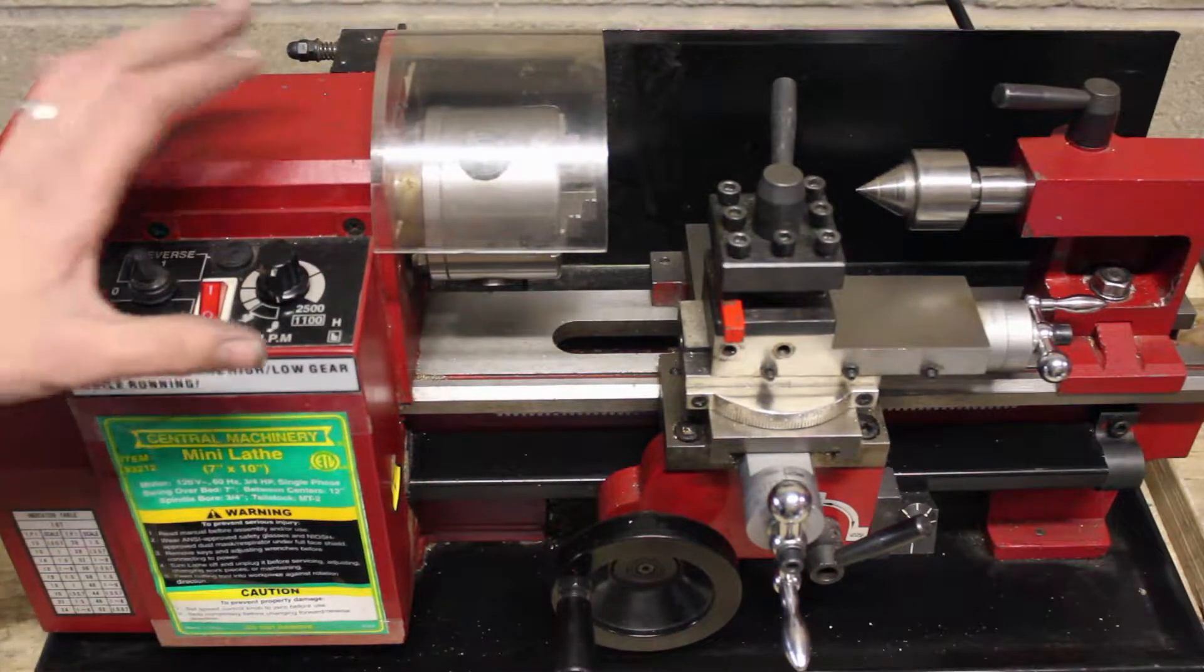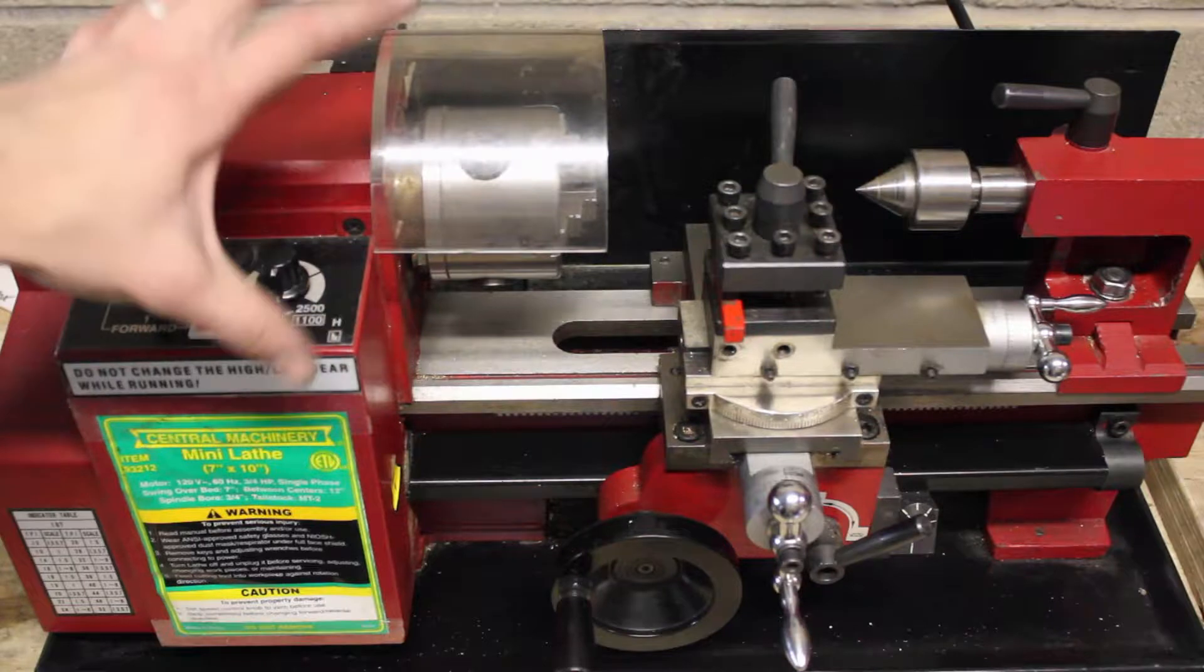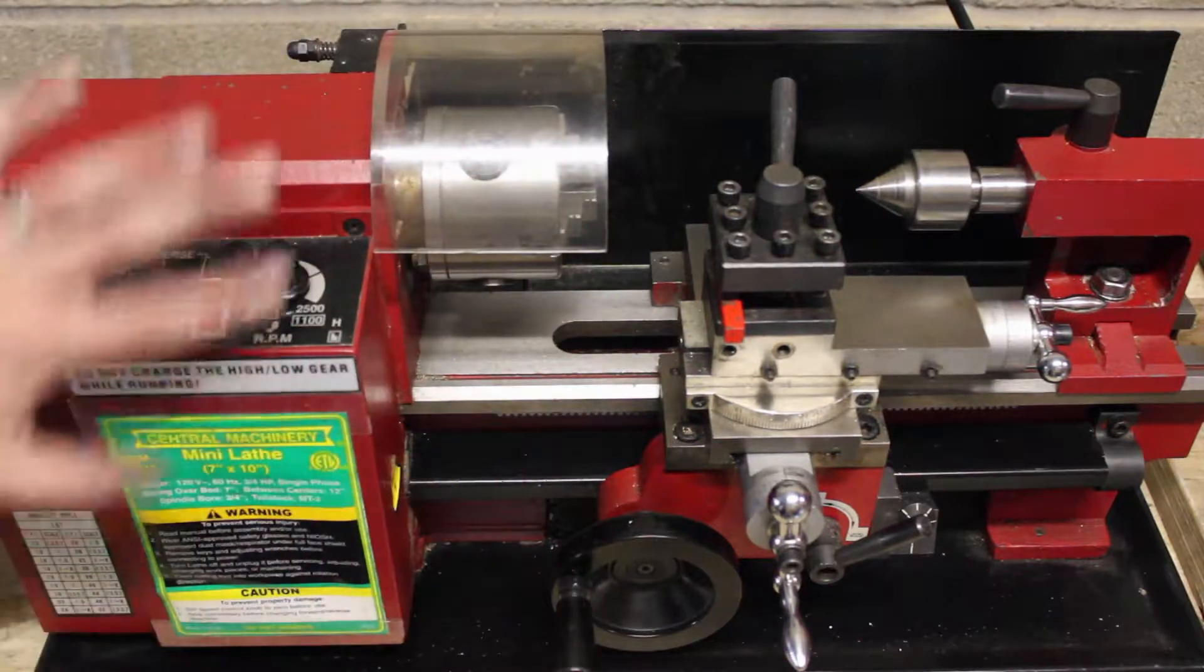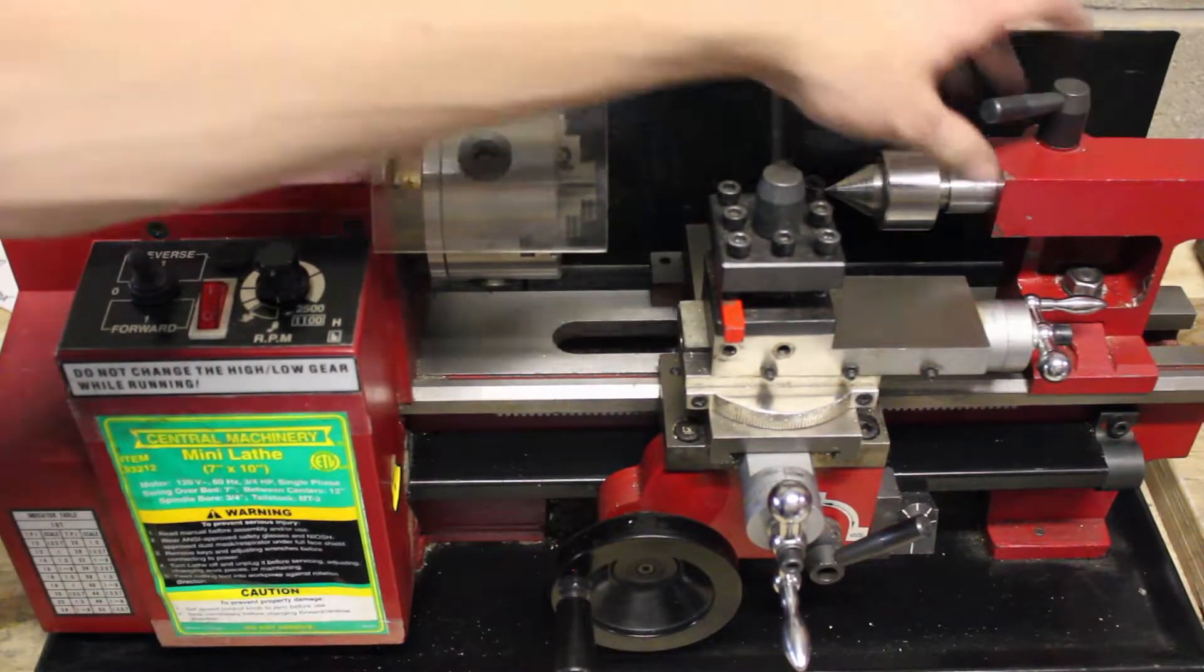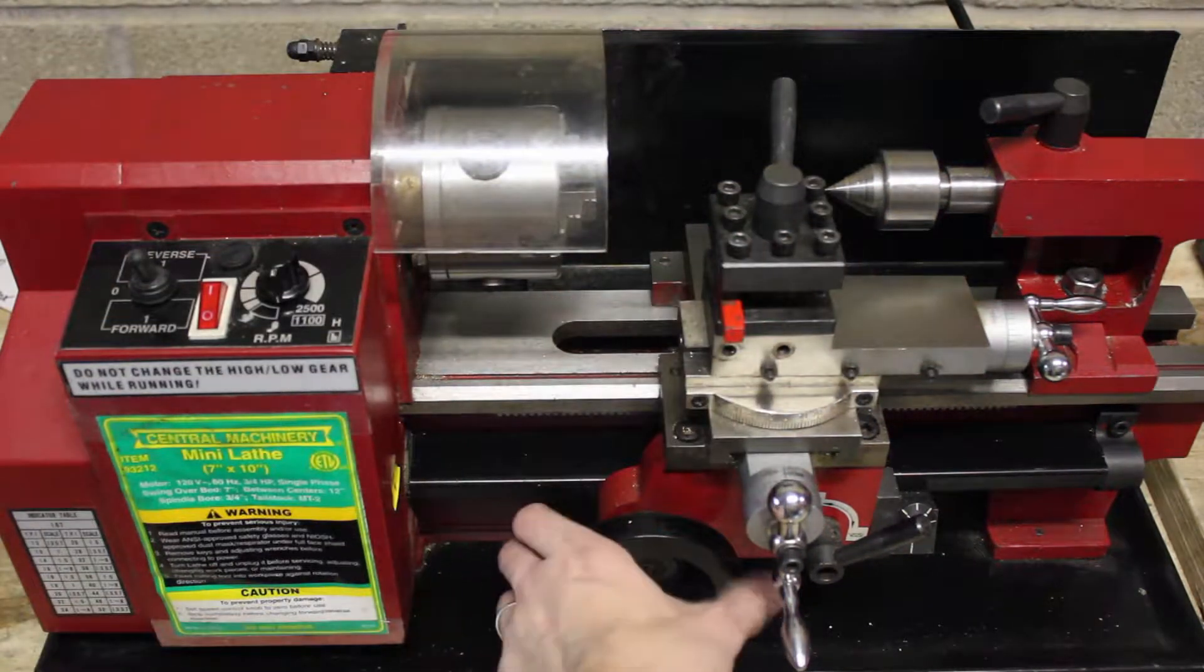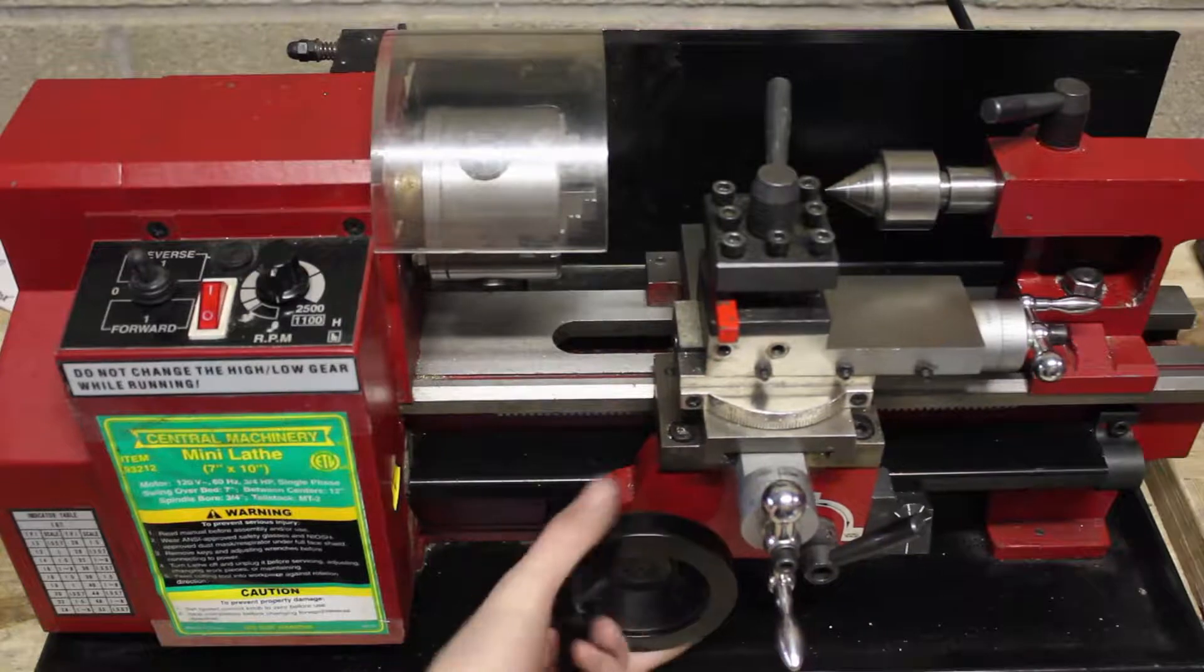Now regardless of what lathe you're using, it's going to have three main parts. The headstock, which is all of this section. The tailstock, which is this part here that moves. And the carriage, which is the part here that moves with the knobs.